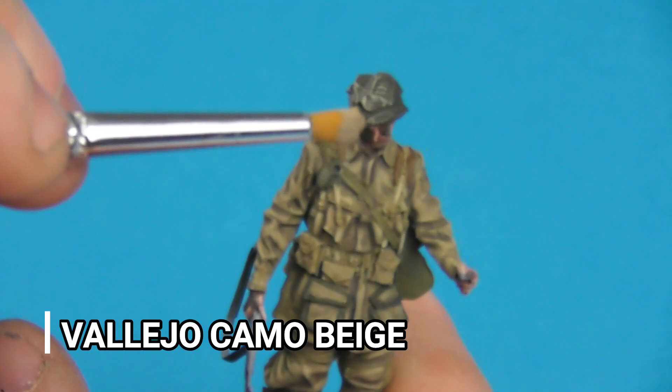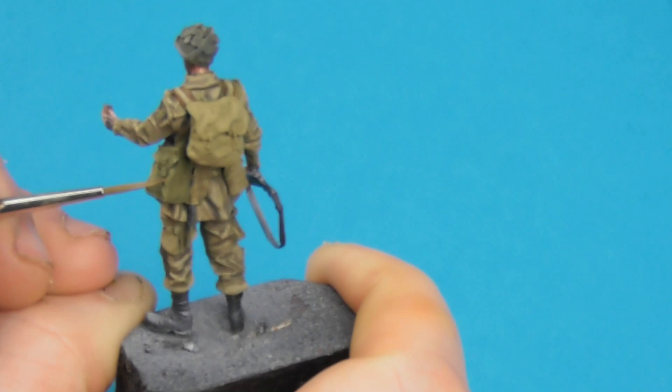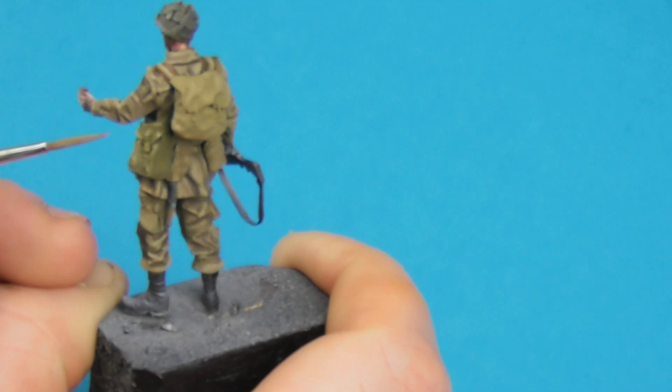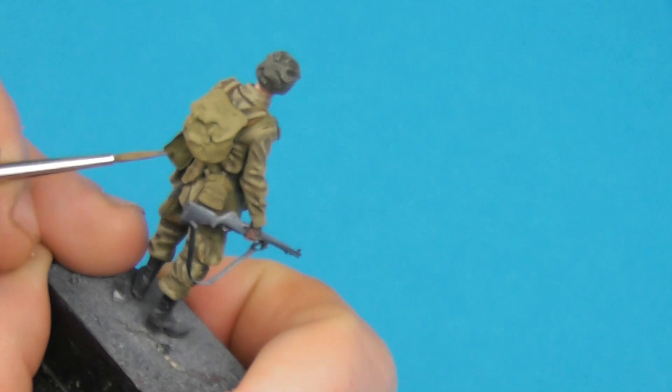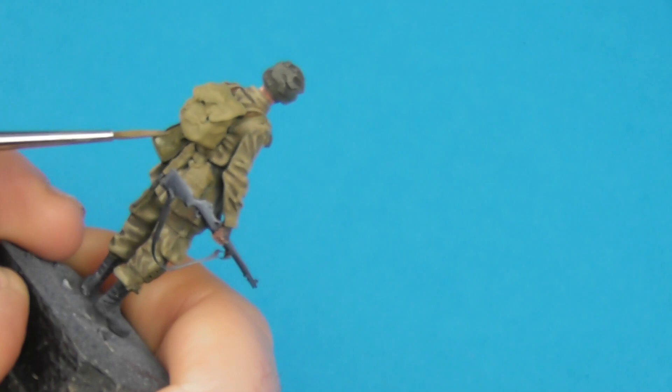Just to pick out the camo net on his helmet, I'm just going to take some Vallejo German Camo Beige, and I'm going to dry brush this onto the helmet quite lightly. I've removed most of the paint onto a piece of cardboard. The trick is don't use kitchen roll or paper towel for doing your dry brush. Actually just use an old tile or a piece of cardboard. It just stops the effect from being chalky. I'm also going to give his pouches a quick highlight. I'm going to mix in a little bit of Vallejo Iraqi Sand into our khaki here. Just a small amount. I don't want to make these too bright.